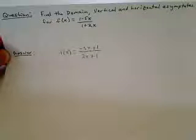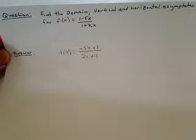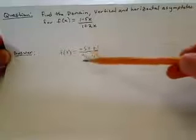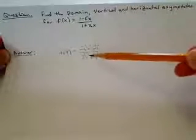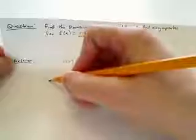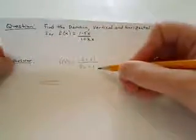Now in order to look at the domain, the domain is all of the values of x for which the equation is defined. The only way this equation will be undefined is if the denominator equals 0, because we can't have a number divided by 0. So the domain includes all values except what would make the denominator 0.